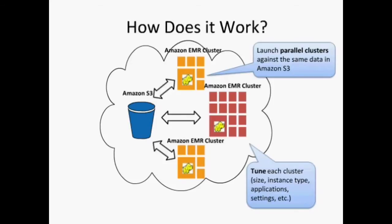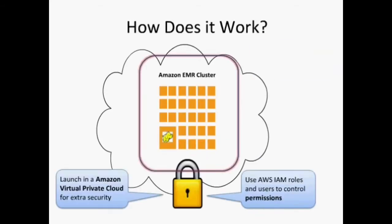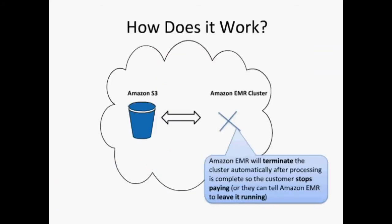You can launch your entire cluster in an Amazon Virtual Private Cloud, a logically isolated section of the AWS network. We also have other tools to control access and permissions. When done with a cluster, you can transfer output to Amazon S3 and terminate the cluster to stop paying for it — using S3 for storage and EMR and compute only when you truly need compute.